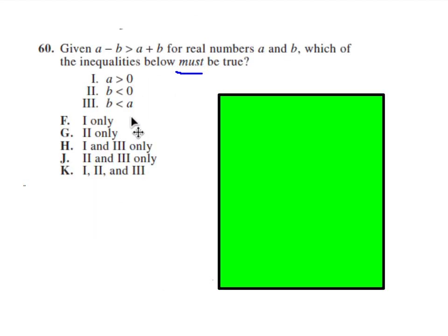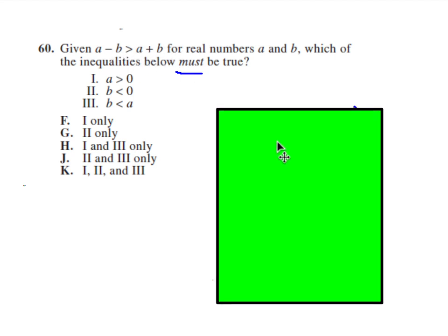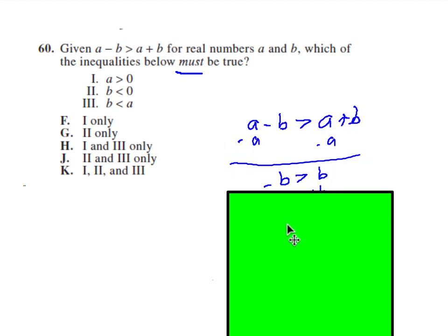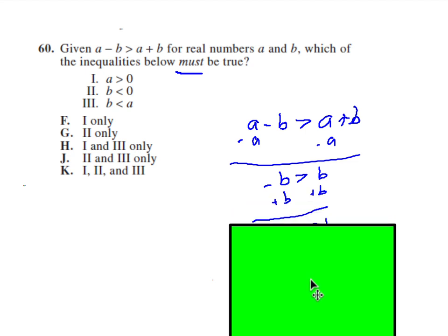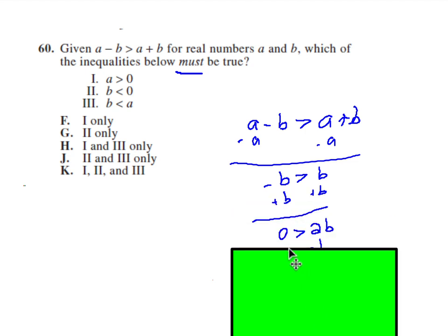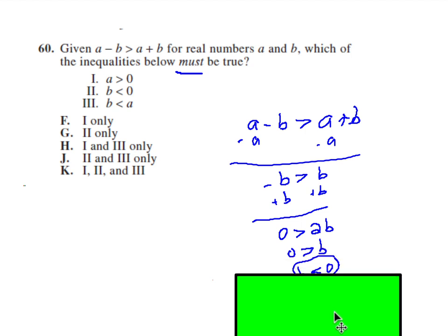Number 60. Which one of these statements must be true? I noticed I had an a on both sides, so I subtracted a from both sides. And I got that the opposite of b is greater than b. Then I added b to both sides. I got that 0 is greater than 2b, because 1b plus 1b is 2b. And divided by 2, I got 0 is greater than b, which also means that b is less than 0. So we know that b must be less than 0. So we know that statement II is true.